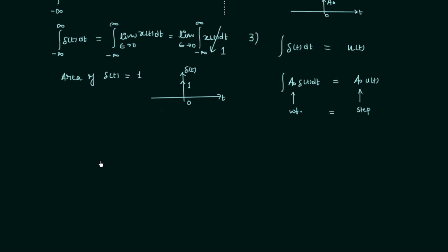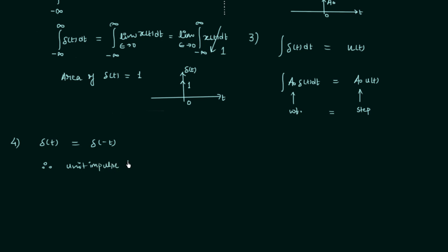Property number 4: we will find out if impulse signals are even or odd. Using the property of even and odd signals — if you see the waveform of a unit impulse signal and try to find the mirror image about the y-axis, you will find it is the same. This means if you take delta(t) and perform time reversal, you get the same signal. This is the property of even signals. Therefore, unit impulse and impulse signals are even in nature.